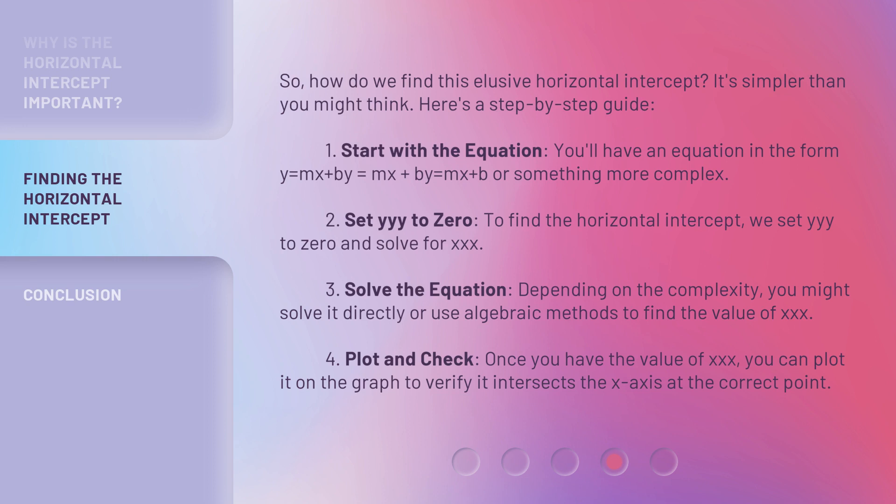3. Solve the equation: Depending on the complexity, you might solve it directly or use algebraic methods to find the value of x. 4. Plot and check: Once you have the value of x, you can plot it on the graph to verify it intersects the x-axis at the correct point.